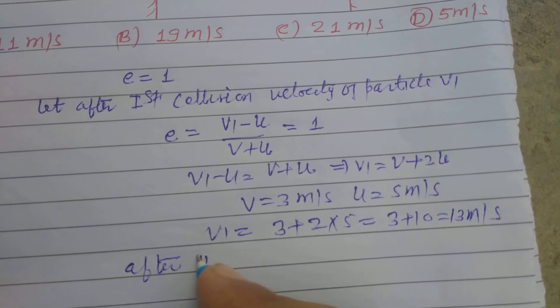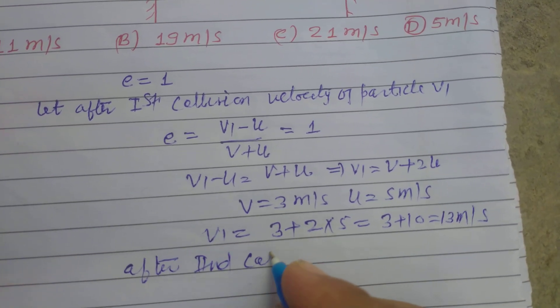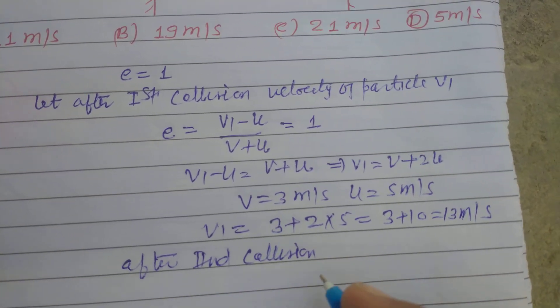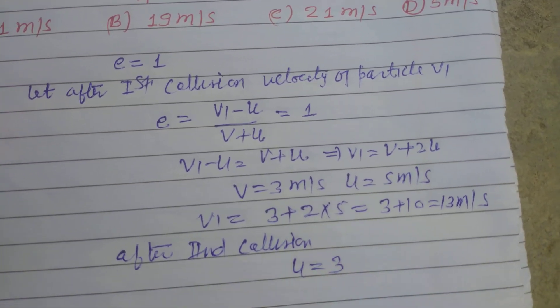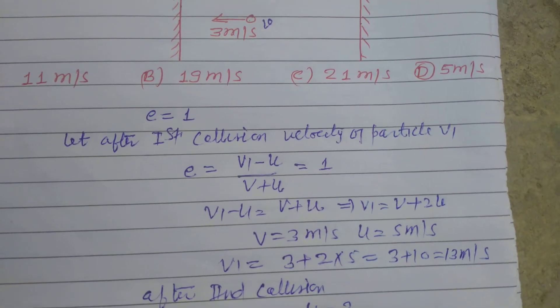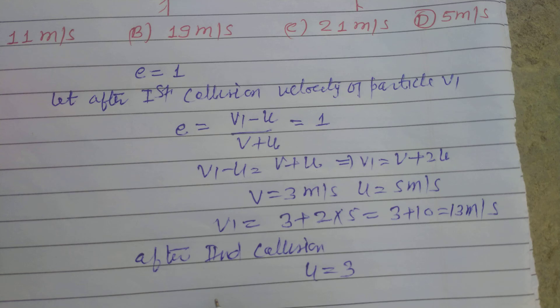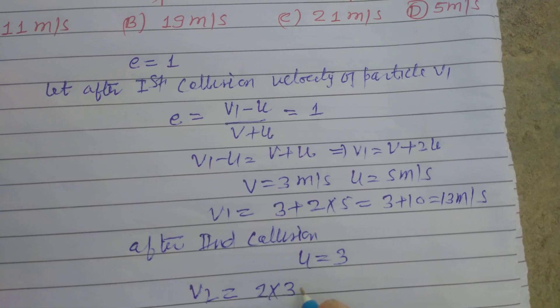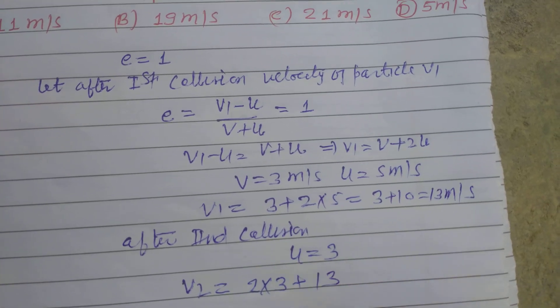After the second collision, velocity u is here 3 because it strikes with the second ball which is moving with u equals 3 meters per second. Therefore v2 equals 2 times 3 plus 13.